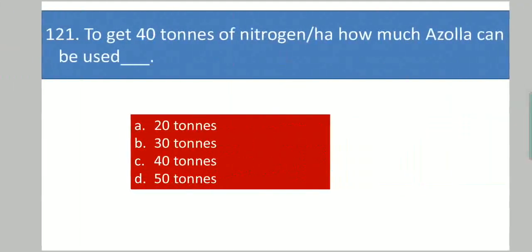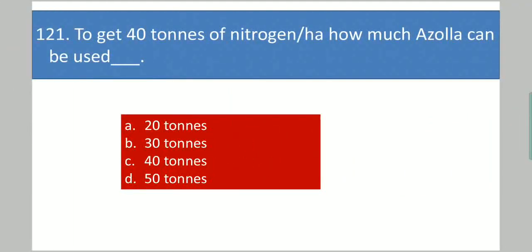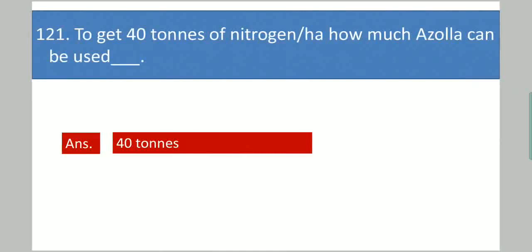Next question: To get 40 kg of nitrogen per hectare, how much azolla can be used? Your options are: 20 tons, 30 tons, 40 tons, 50 tons. Your answer is 40 tons.